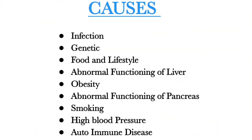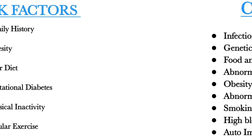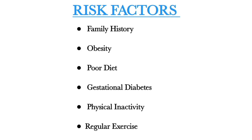Next, the causes of diabetes mellitus. First is infection. Second is genetic — if any member of your family has diabetes, there is a chance of you getting diabetes mellitus. Next are food and lifestyle, abnormal functioning of the liver, obesity, abnormal functioning of the pancreas, smoking, high blood pressure, and autoimmune disease.